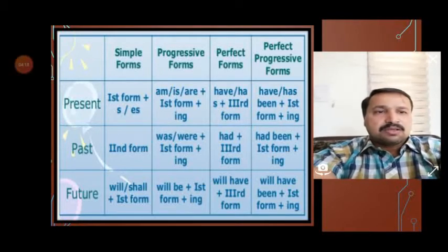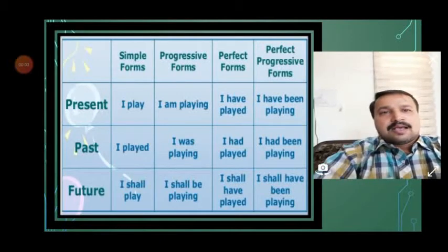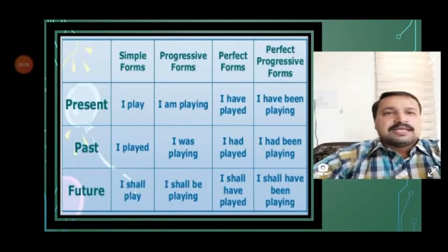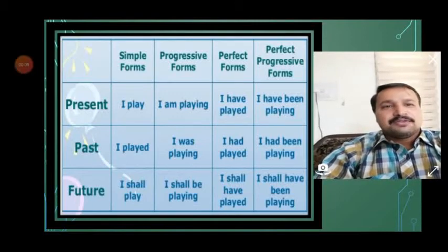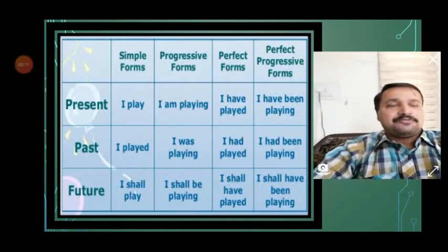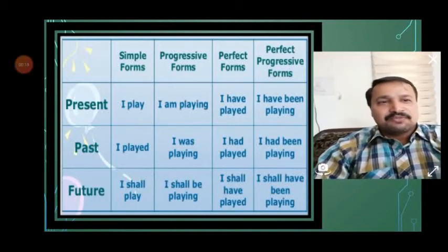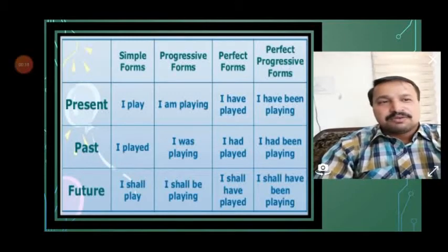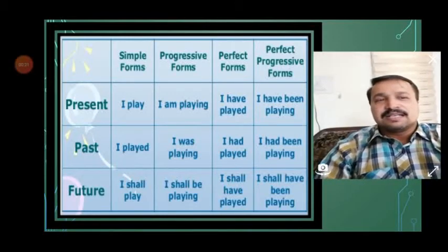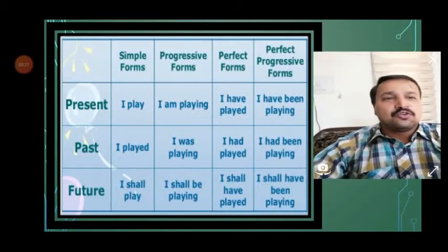Now let's see examples. In simple present tense: I play, you play, we play, they play. If the subject is 'he' or 'she', the verb changes with an 's' or 'es' addition — he plays, she plays, Raju plays.